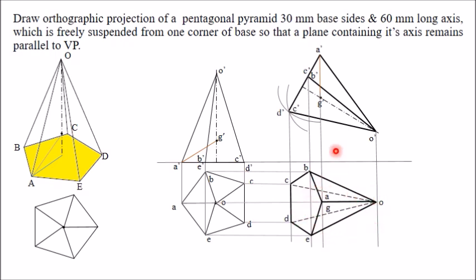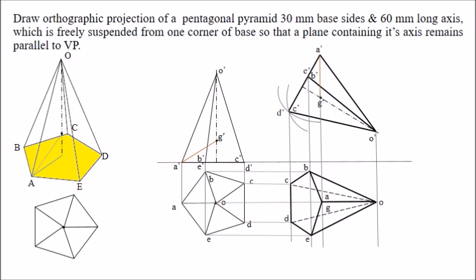In this way you can draw the entire top view and get the required projection. The final condition states that the plane containing the axis remains parallel to VP. The axis goes from O to A and passes through center point G. You can see that this axis is parallel to the XY line, so one plane passing through this axis is parallel to VP, satisfying all the conditions. This is the final front view and this is the final top view. Thank you for watching this video.